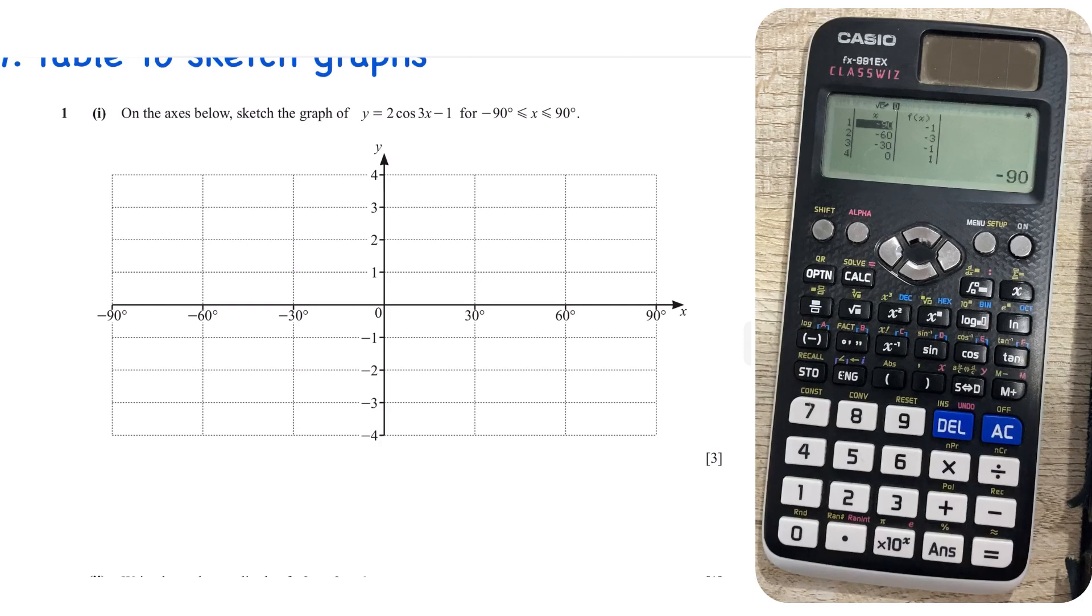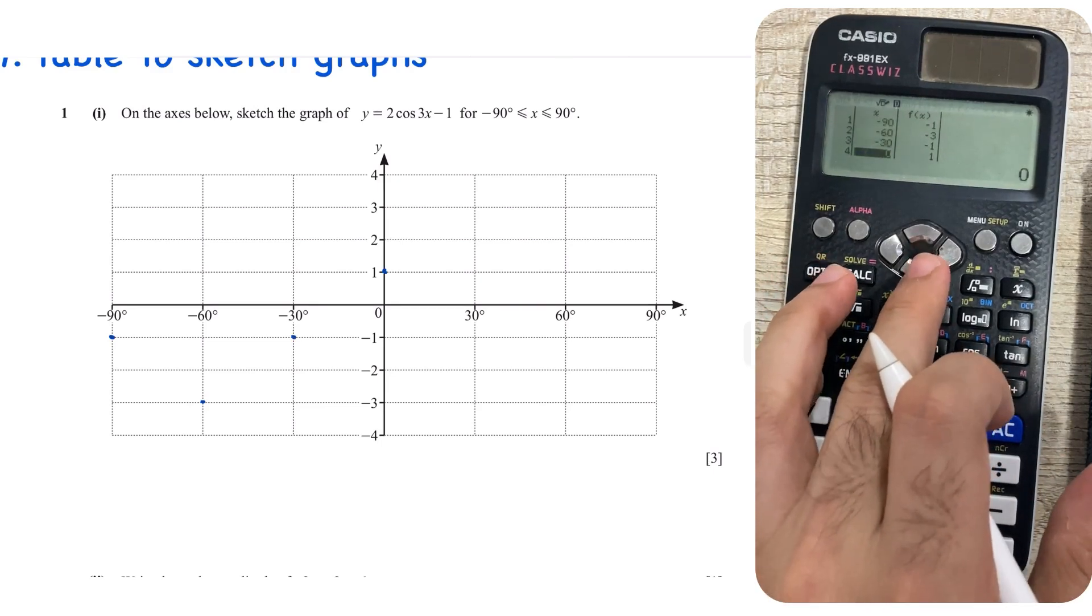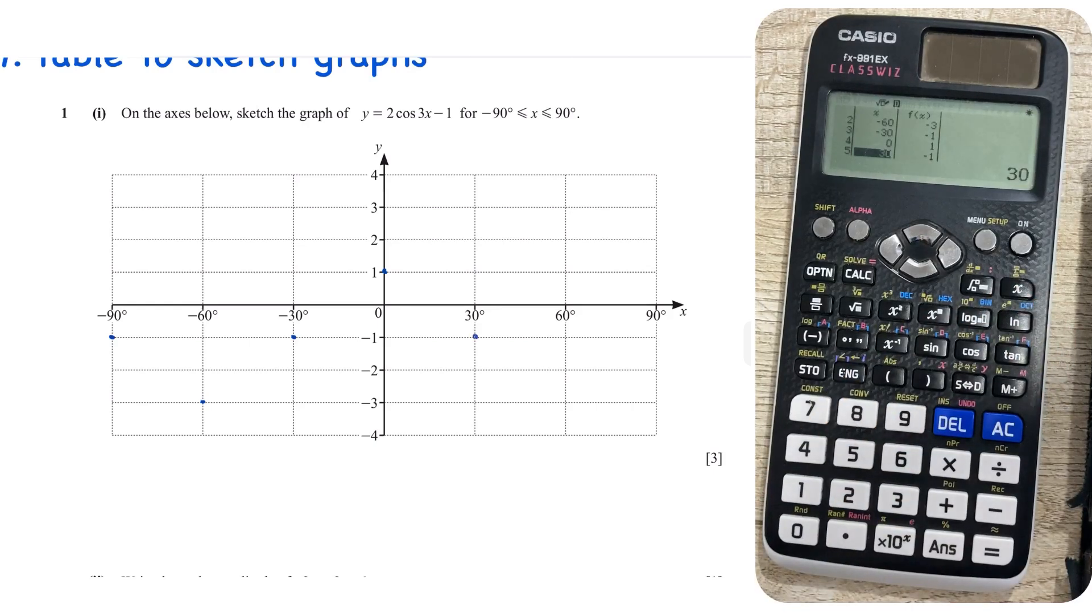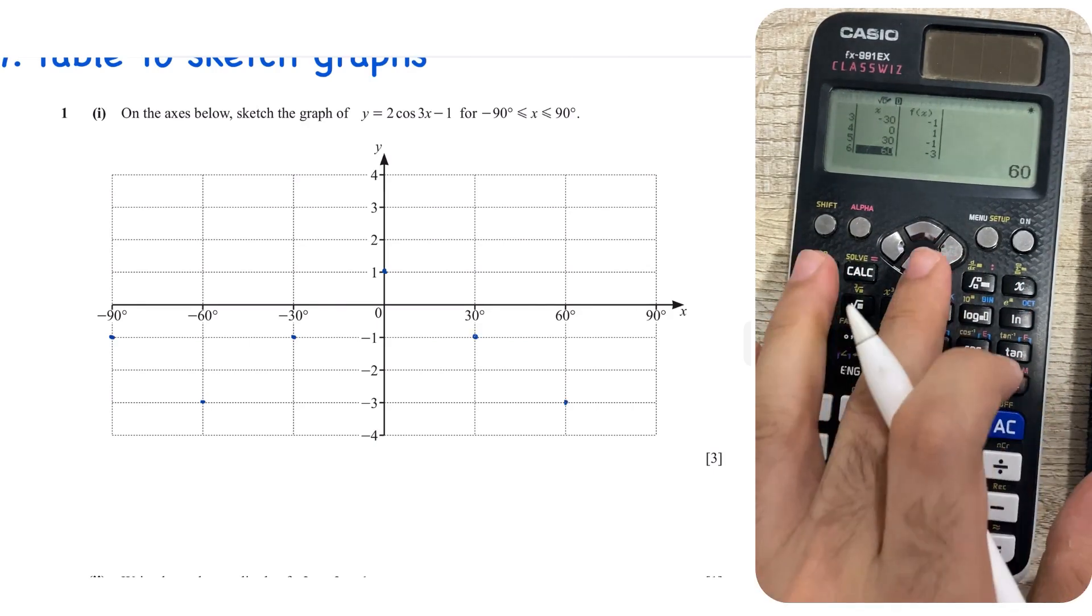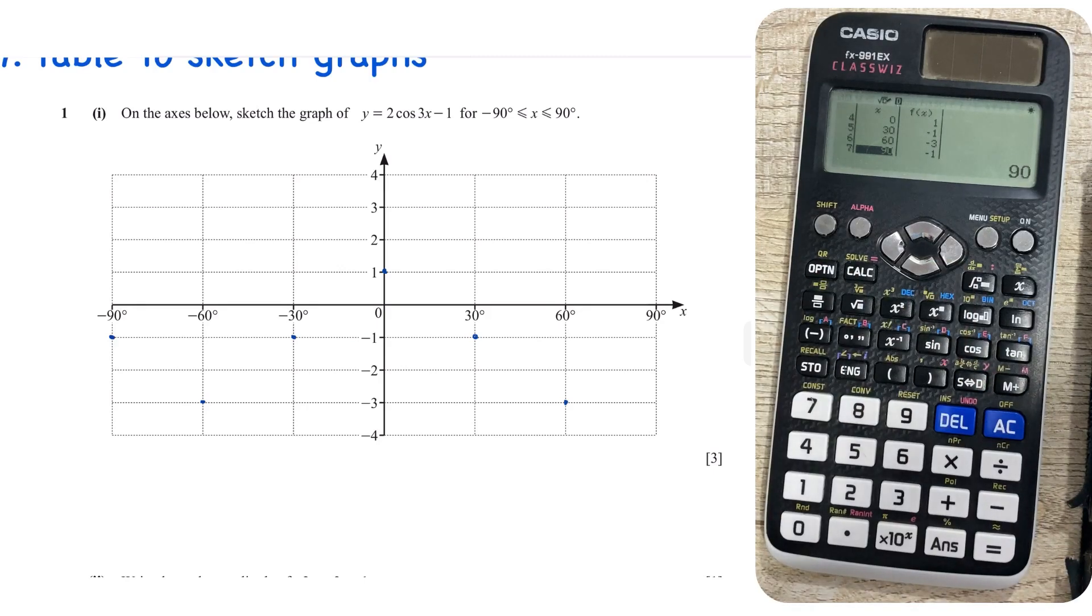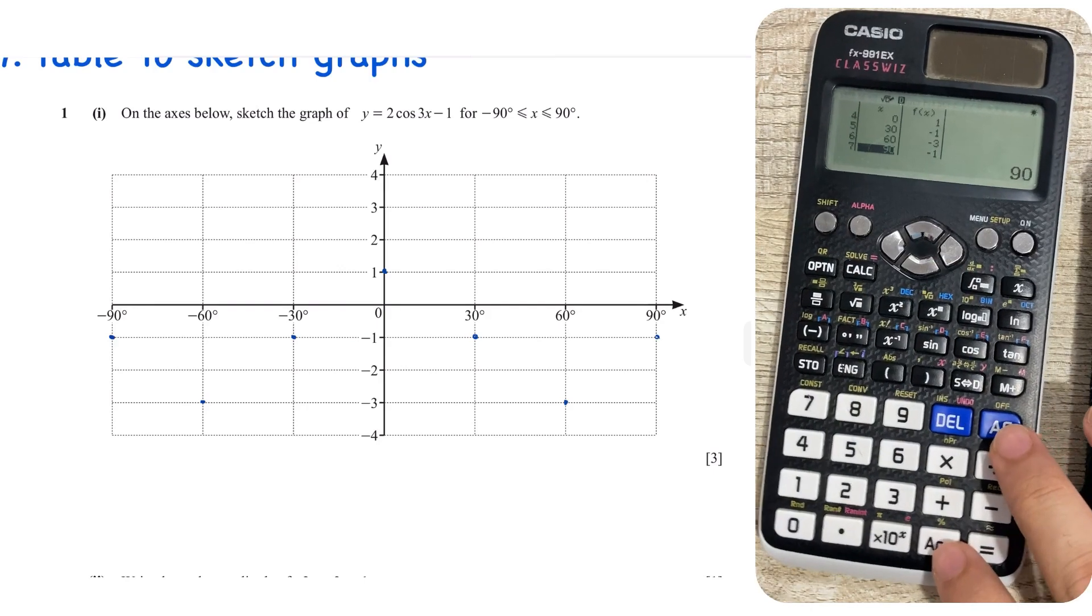So press equals, and there you go, you know that at minus 90, it's equal to minus 1, so you know, you can mark your values, and then eventually plot them. At minus 60, it's minus 3, at minus 30, it's minus 1 again, at 0, it's 1, go down, 30, it's minus 1, when it's 60, it's minus 3, and when it's 90, it is minus 1, okay. And then you can just join these points, and make a nice and smooth cos curve out of it.